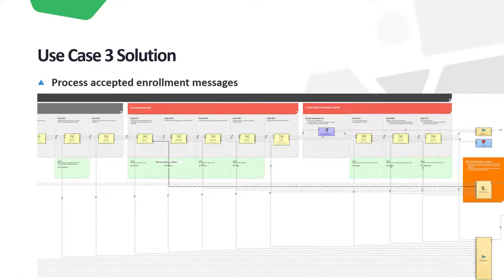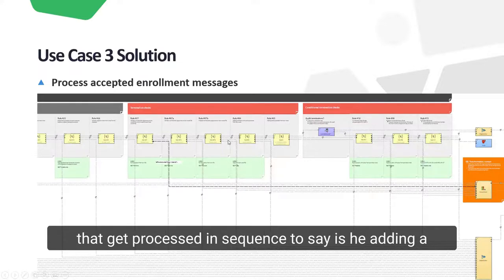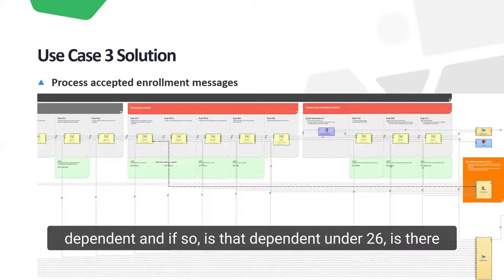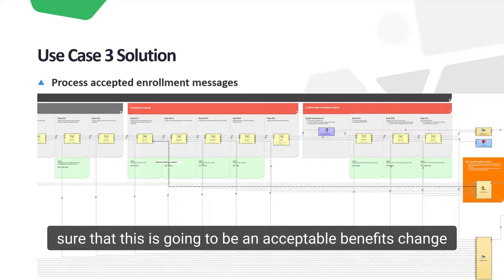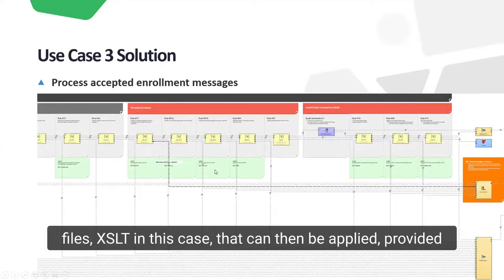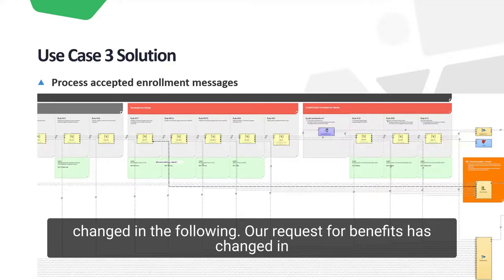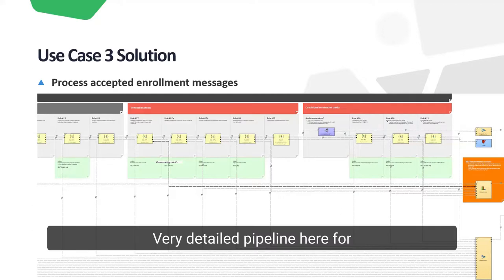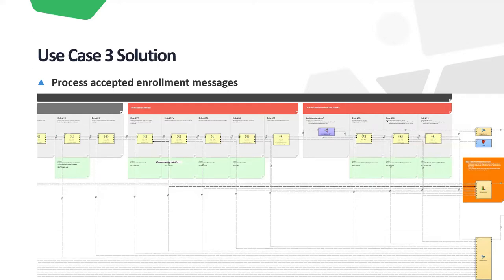We run through a whole series — you can see 25, 27, lots of different rules here. They get processed in sequence to say, are we adding a dependent? And if so, is that dependent under 26? And is there a primary care physician set for it? Or is that required? All of those steps that need to be processed to make sure that this is going to be an acceptable benefits change. And the artifacts that come out of this are often change files, XSLT in this case, that can then be applied, provided to the insurance company to say, hey, this request for benefits has changed in the following way. A very detailed pipeline for managing and automating the management of these benefits change requests.